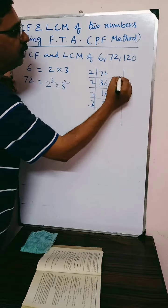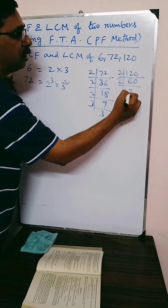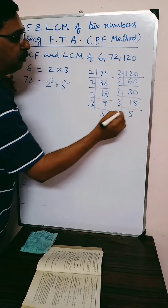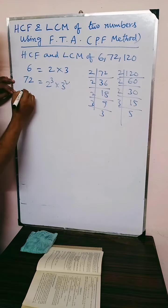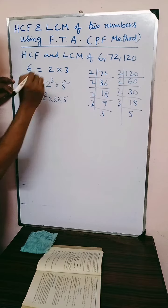Again, 120 is written this way: 2 into 60, 2 into 30, again 2 into 15. Now 3 into 5. So 2 into 2 into 2. So 120 is written as 2 cubed into 3 into 5.